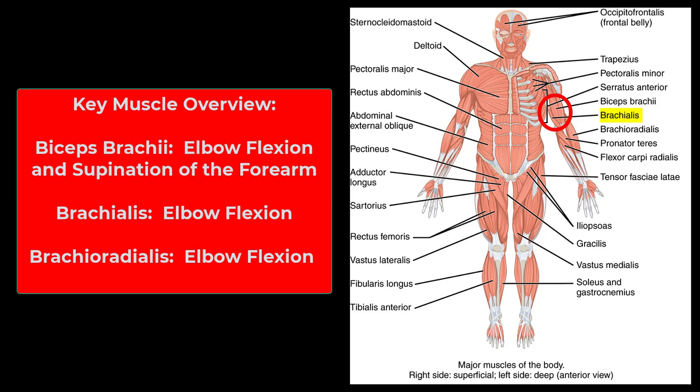The brachialis is underneath the biceps brachii and is also an elbow flexor — called the workhorse of the elbow because it's the strongest elbow flexor in any position. Then the brachioradialis: it starts in the brachium and travels down the radius on the thumb side, crossing the elbow as another elbow flexor. Hammer curls specifically strengthen the brachioradialis.